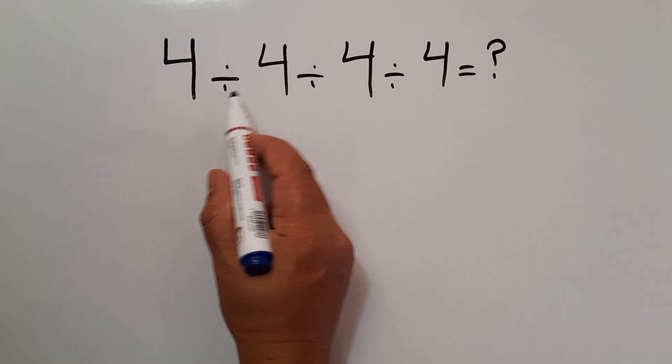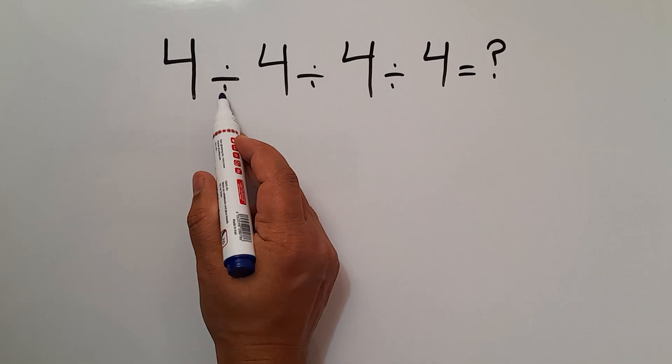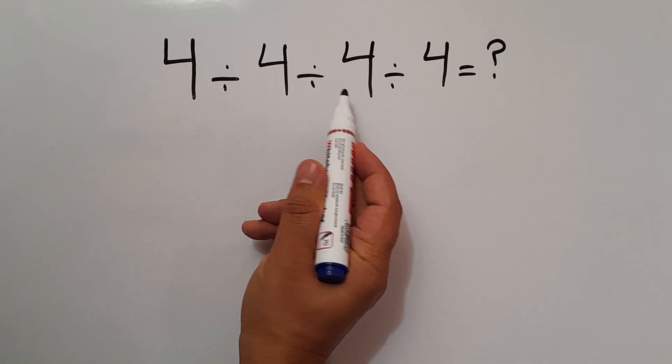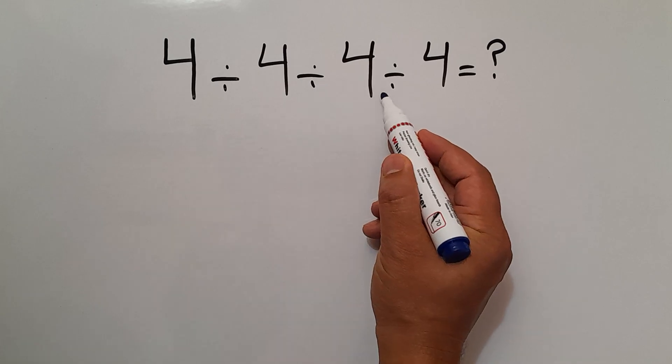In this expression, we have three divisions. And as we know, when we have more than one division in one expression, we have to work from left to right. So first this division, then this division, and finally this division.